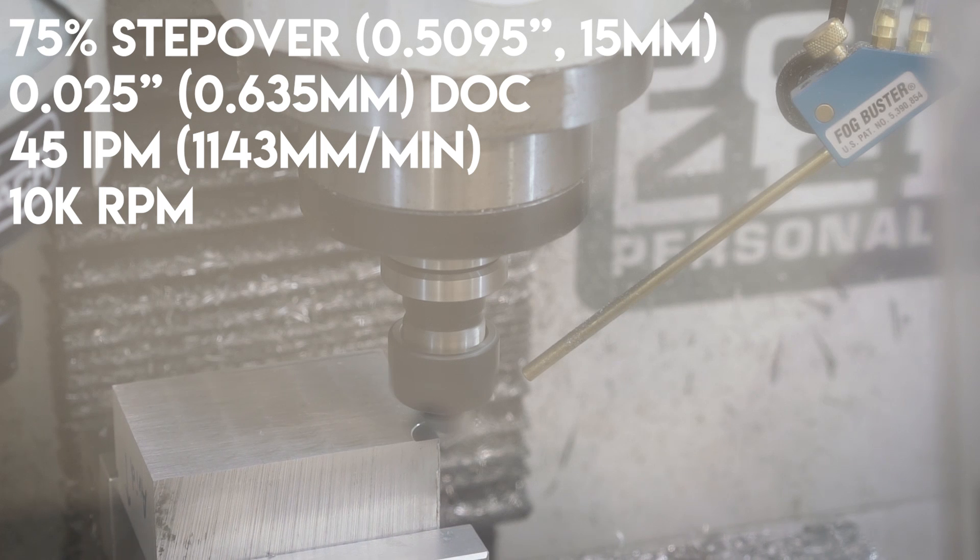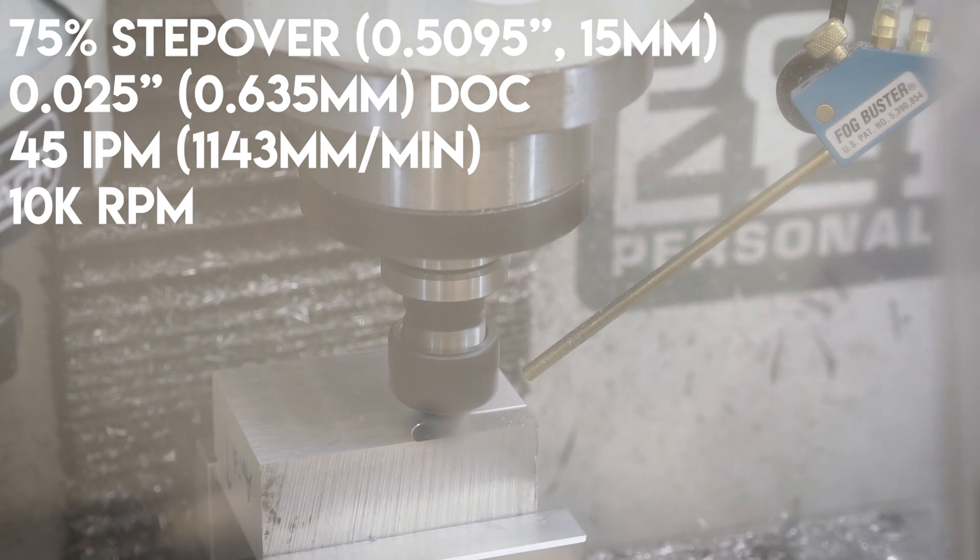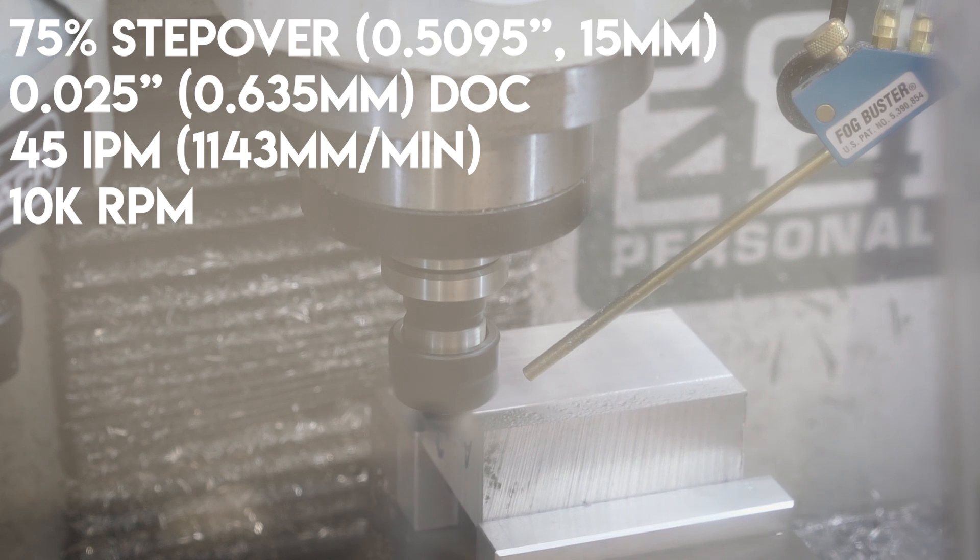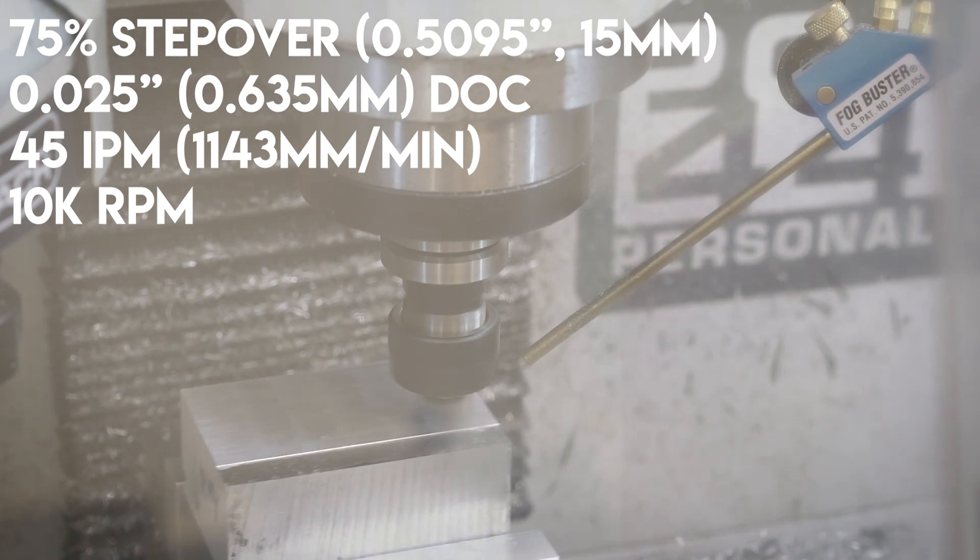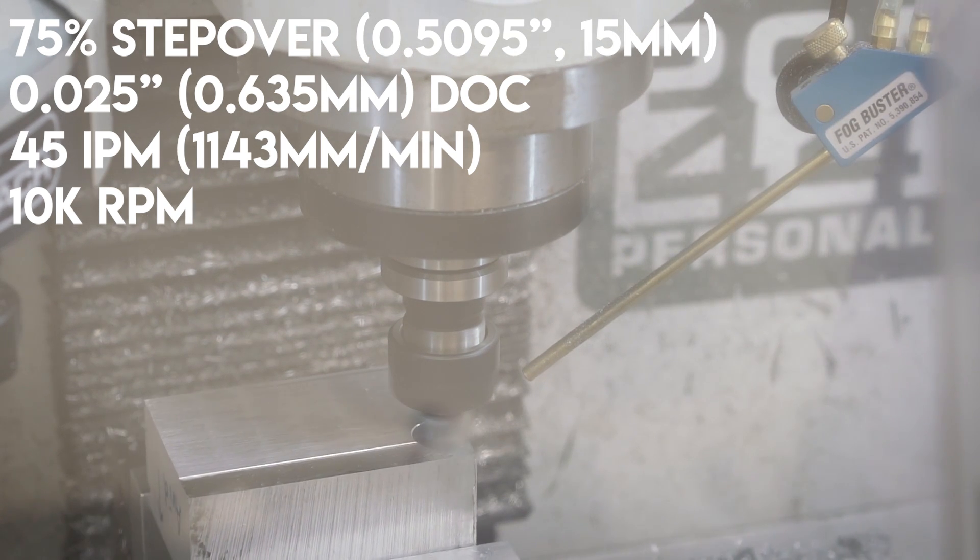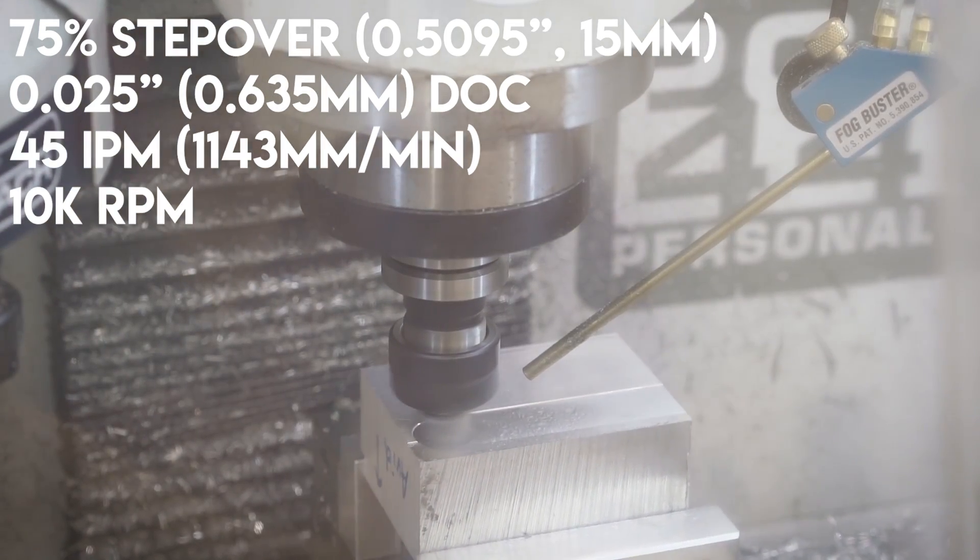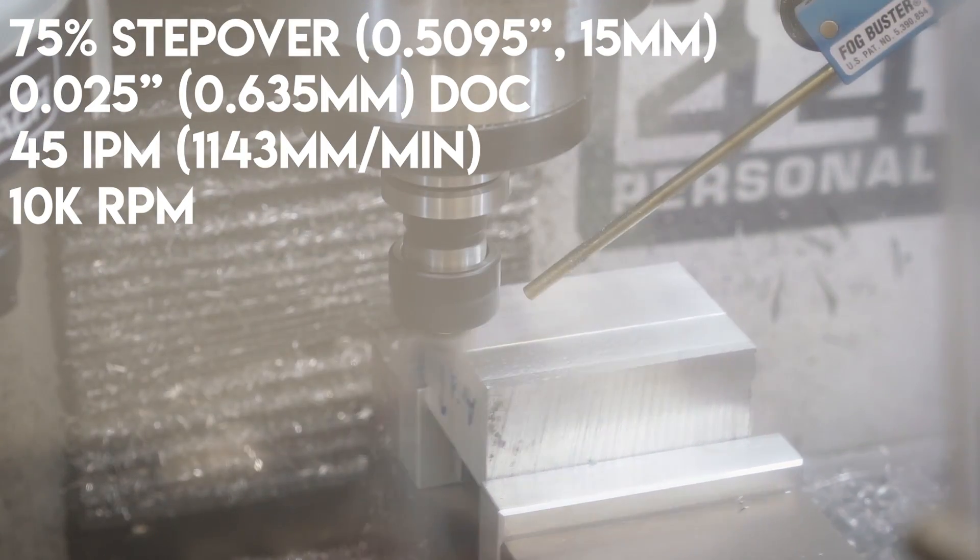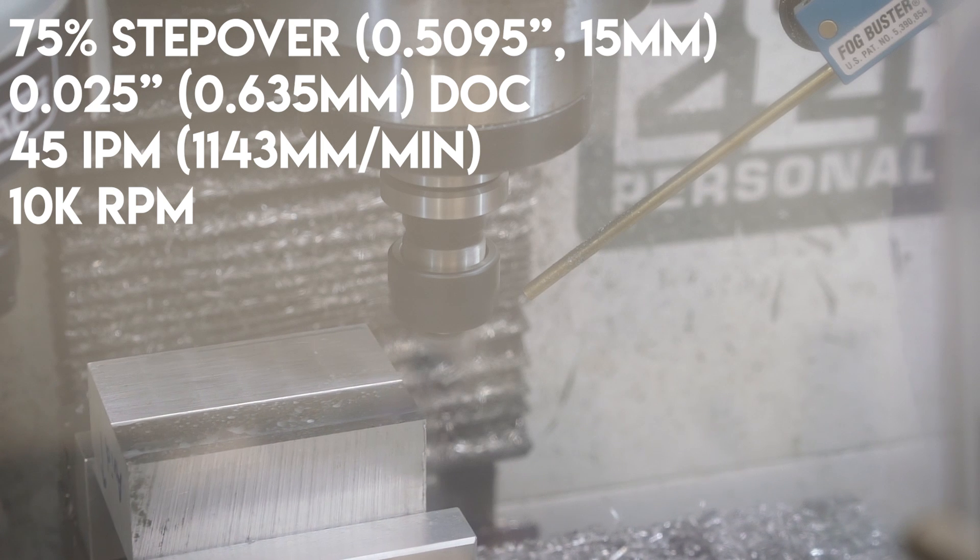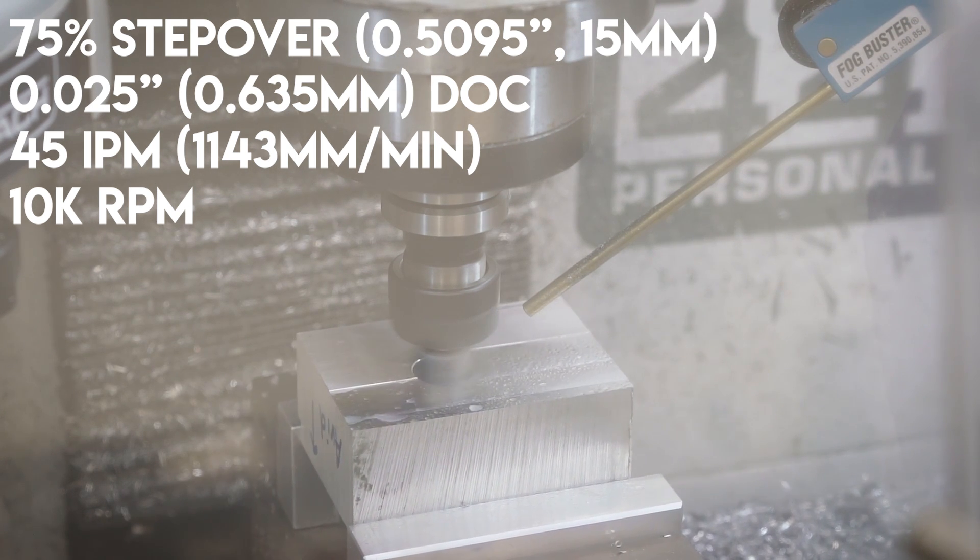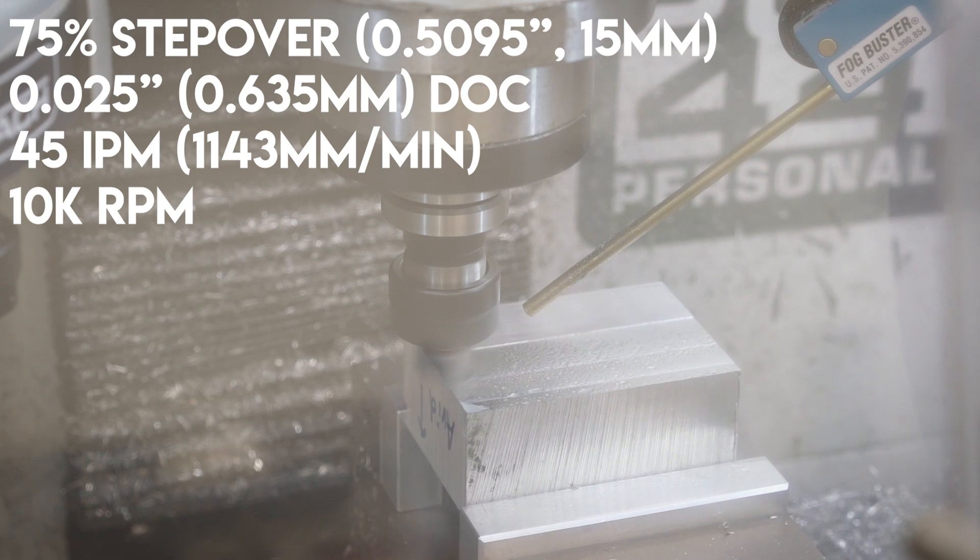So this is the exact same cut on the Tormach, but it's not really the exact same cut. The Tormach can only go up to 10,000 RPM. So I had to drop that down to 10,000 RPM. And therefore, I had to change the feed rate. The feed rate is adjusted to about 45 inches per minute. That gives me about the same chip load as I was doing on the Avid when I was doing 24,000 RPM and about 100 inches per minute. So that's kind of how the adjustment went.